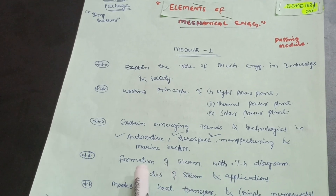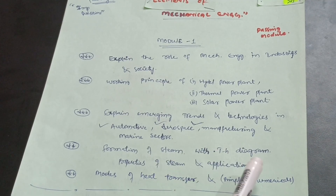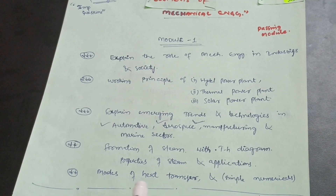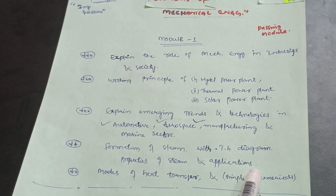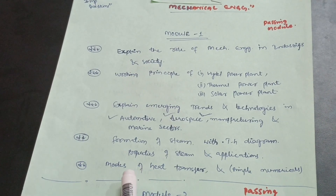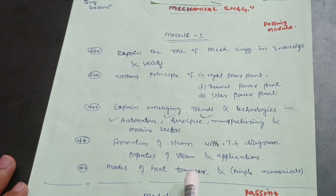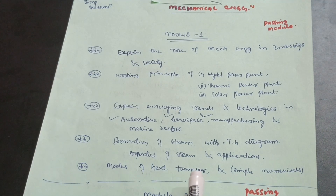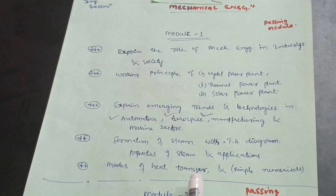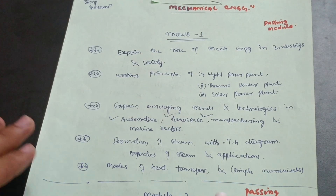Another most important question is formation of steam with a T-H diagram, properties of steam, and applications. Also, as per the syllabus, you should cover modes of heat transfer. If you are not comfortable with it, you can leave it, but you should have some concepts about conduction, convection, and radiation, along with some simple numericals. This completes the passing module for Module 1.